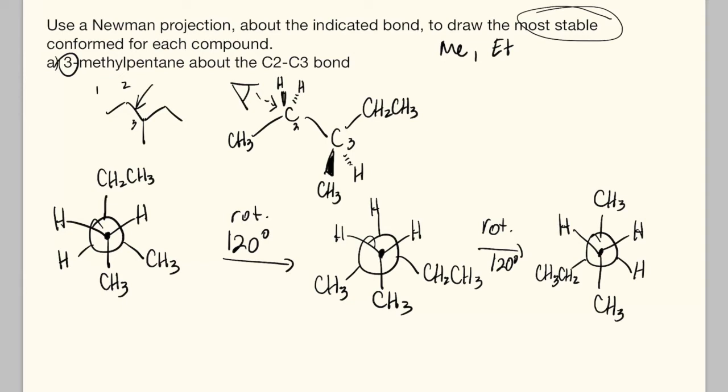Now that we have our three potential isomers for the staggered conformations, we want to evaluate them for strain. These two methyl groups are in close proximity and experience steric strain. This methyl group and ethyl group experience steric strain. We have two interactions between three groups, one interaction between two groups, or one interaction between two groups.